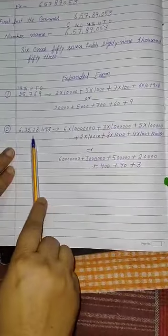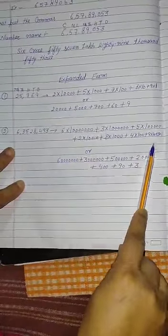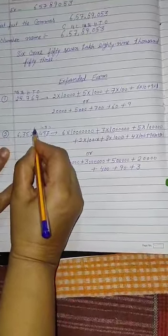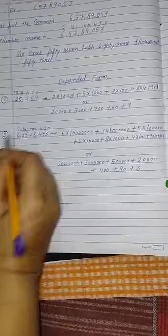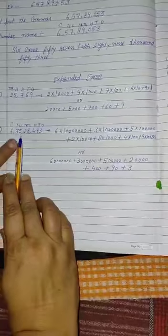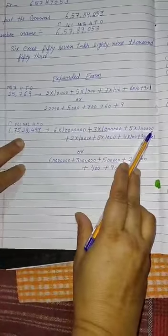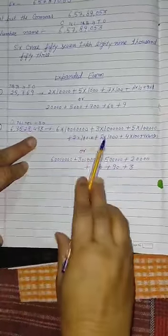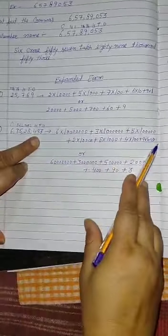Next is six, three, five, two, eight, four, nine, three. Expanded form में आप किस तरह से करेंगे? इसके लिए आपको सबसे पहले ones, tens, hundred, thousand, ten thousand, lakh, ten lakh, crore. Six को one crore से multiply करेंगे. Plus three into ten lakh. Plus five into lakh. Plus two into ten thousand. Plus eight into thousand. Plus four into hundred. Plus nine into ten. Plus three into one.